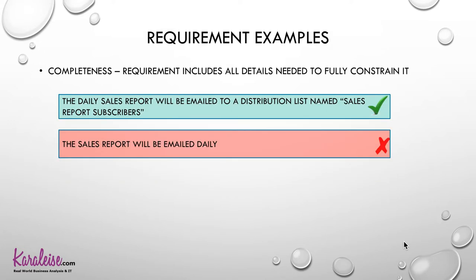Each requirement must also be complete — it must include all the details needed to fully constrain it. For example: 'The daily sales report will be emailed to the distribution list named Sales Report Subscribers.' That has all the details needed — what gets sent, when, and to whom.